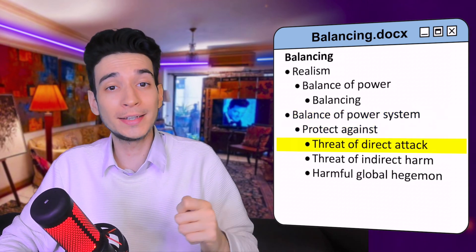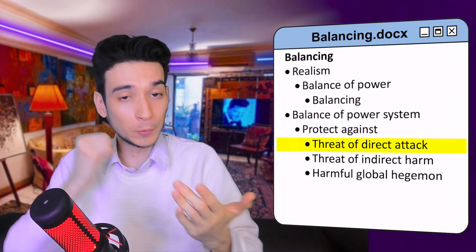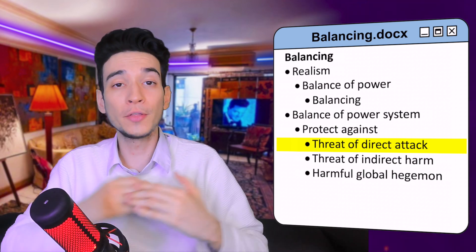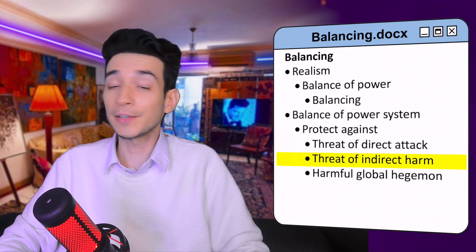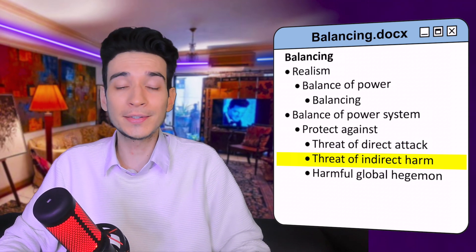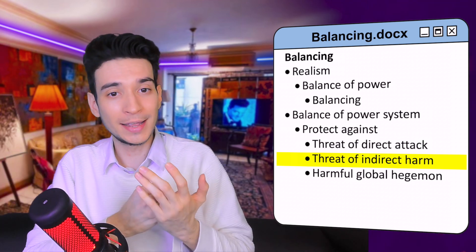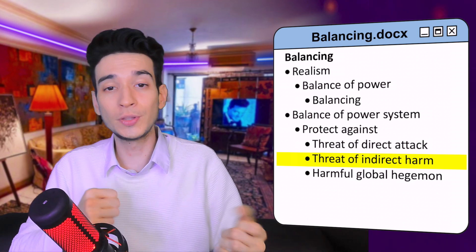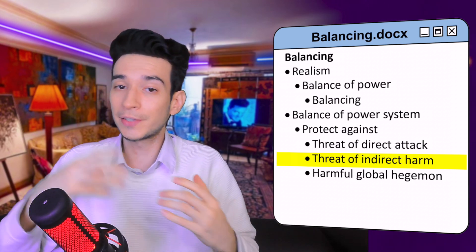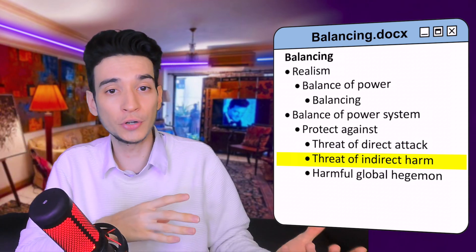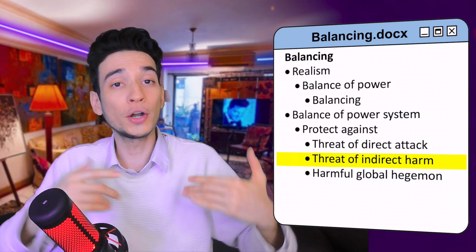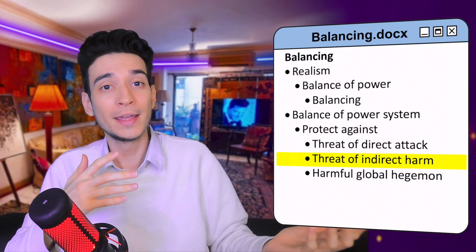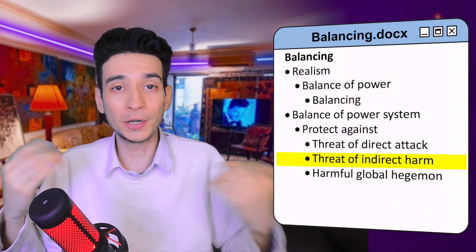The first one is the threat of a direct attack by another major country. The second one is the threat of being harmed indirectly by another country — this is when the military actions of a major country undermine the security of another one, even if unintentional.